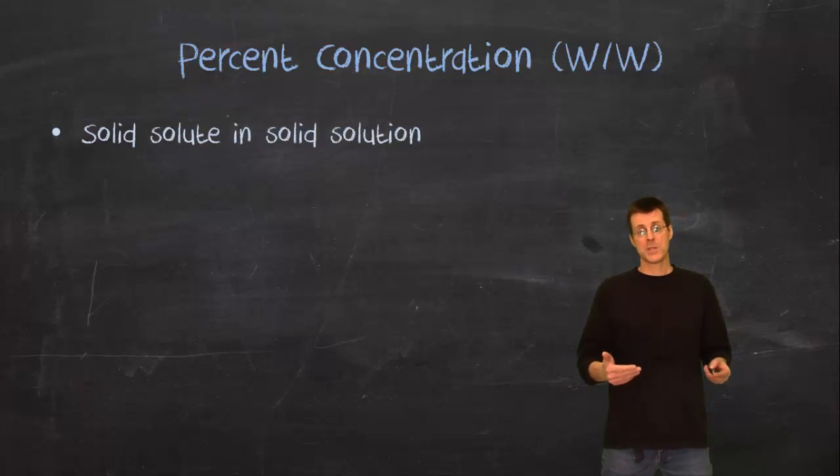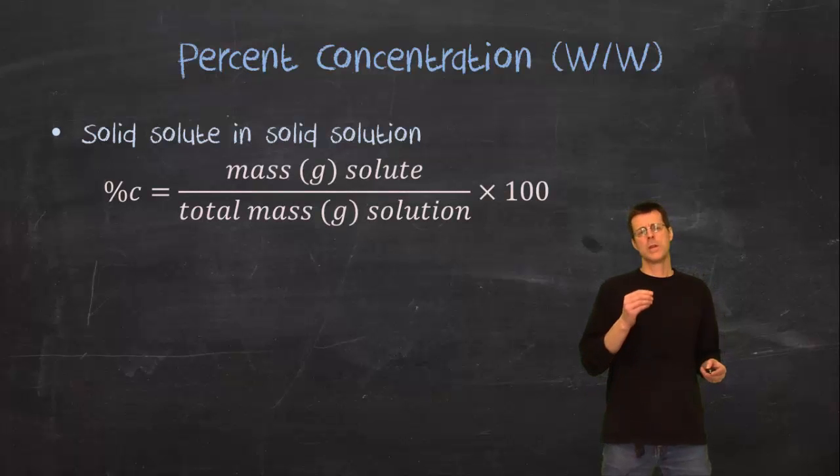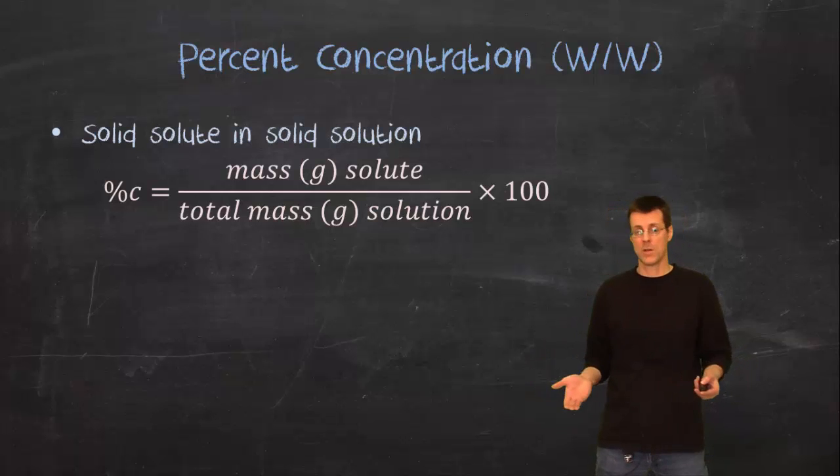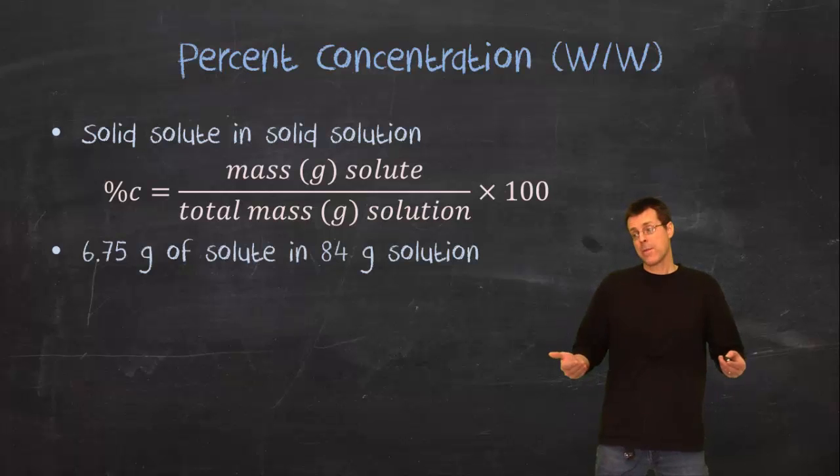Now you could perhaps have both a solid solute and a solid solution like an alloy or something like that. So you would then want to take the masses of each because it doesn't make sense to measure volumes of solids. You measure masses of solids.